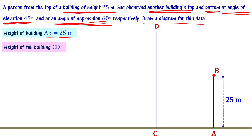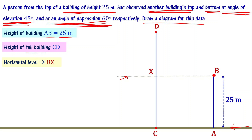CD represents the tall second building. The observer at B is looking at D at an angle of elevation of 45 degrees and also looking at C at an angle of depression of 60 degrees. Draw a horizontal level line BX, parallel to the ground at the level of the observer B.